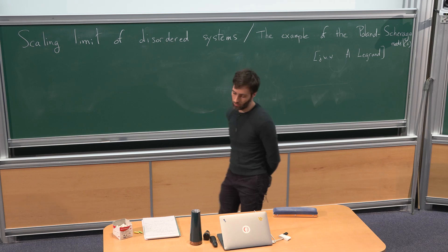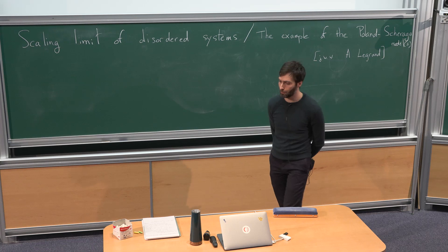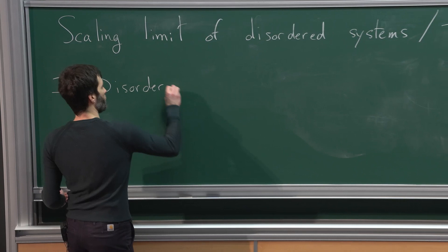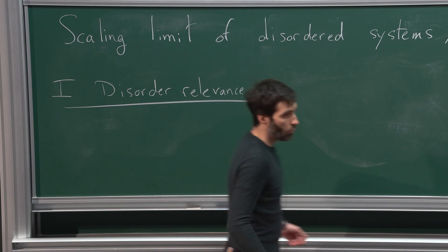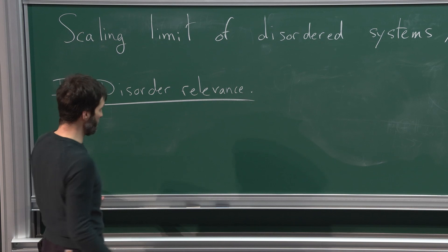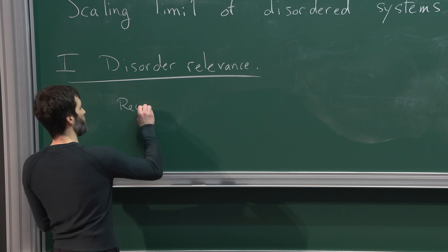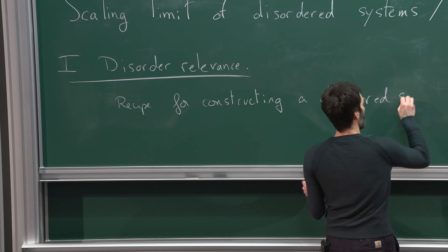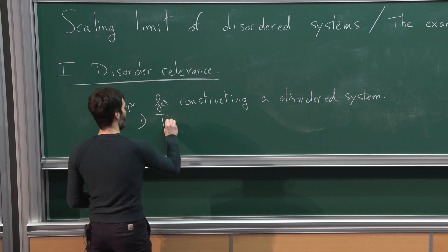Let me first start with some general introduction and talk about disorder relevance for disordered systems. I'll give a general introduction because I'm not sure everyone here is familiar with what a disordered system is. Let me give you a recipe for constructing a disordered system. The recipe is simple: first take a system — a model that you know pretty well, say from statistical mechanics.